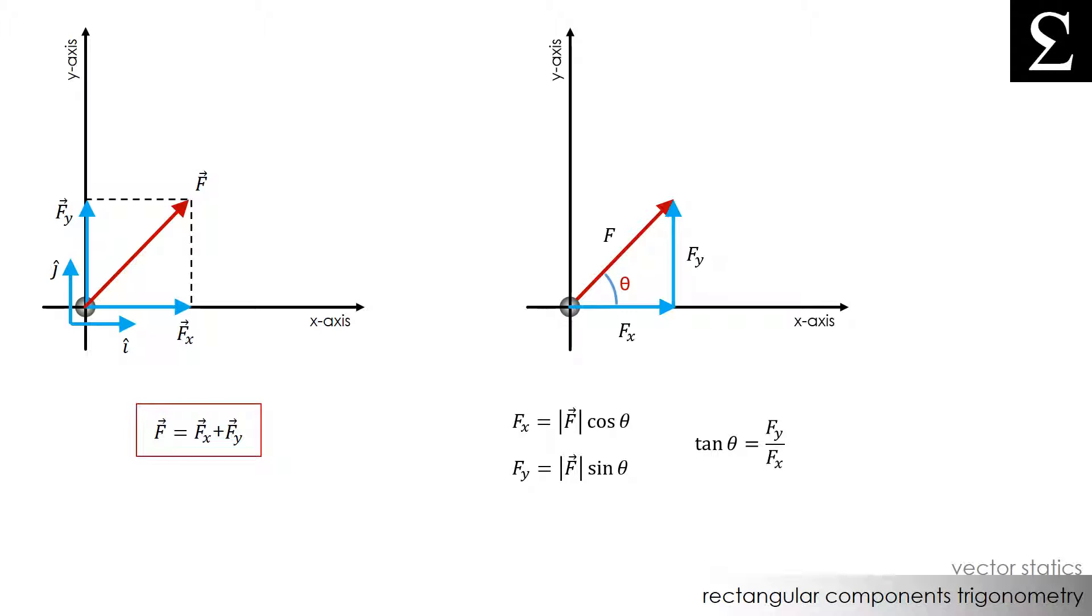Finally, if we wanted to find the magnitude of the force f, we could use the Pythagorean theorem to do so. The magnitude of f would be the square root of fx squared plus fy squared.